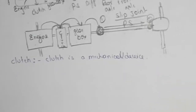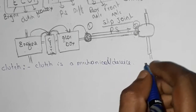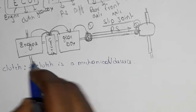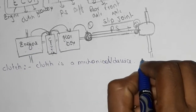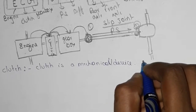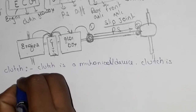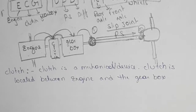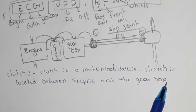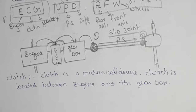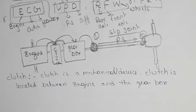The clutch is a mechanical device located between the engine and the gearbox. So the clutch is located between the engine and the gearbox. Its main function is engaging and disengaging the power flow between the engine and the gearbox.